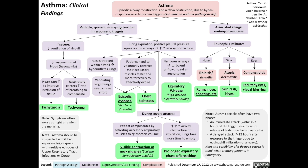Let's talk about the variable airway obstruction events first. If these events are severe, the airway obstruction will reduce ventilation of the alveoli, which in turn leads to reduced oxygenation of the blood, resulting in hypoxemia. These processes result in the heart rate increasing to improve the perfusion of tissues, manifesting as tachycardia, as well as the respiratory centers increasing the rate of breathing to compensate, resulting in tachypnea.